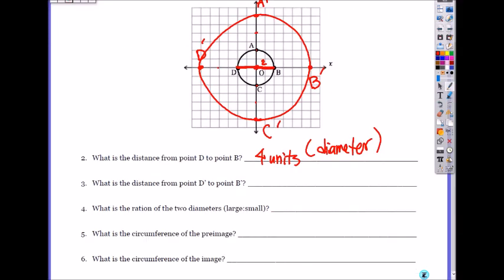What is the distance from D prime to B prime? D prime to B prime is 2, 4, 6, 8, 10, 12, 12 units. And that's again diameter of an image. This is the diameter of the image after transform.